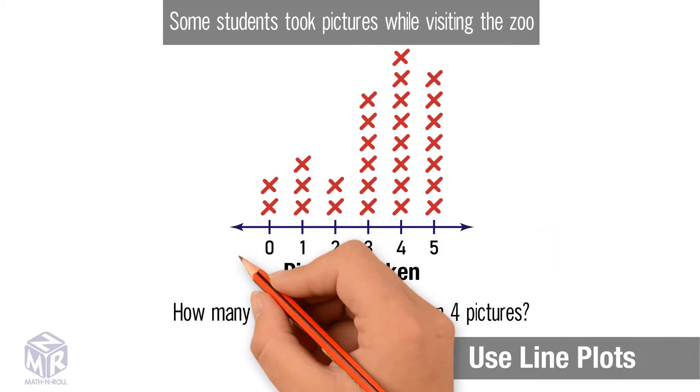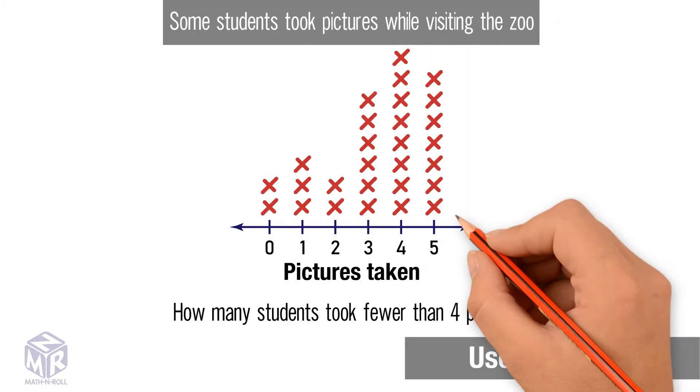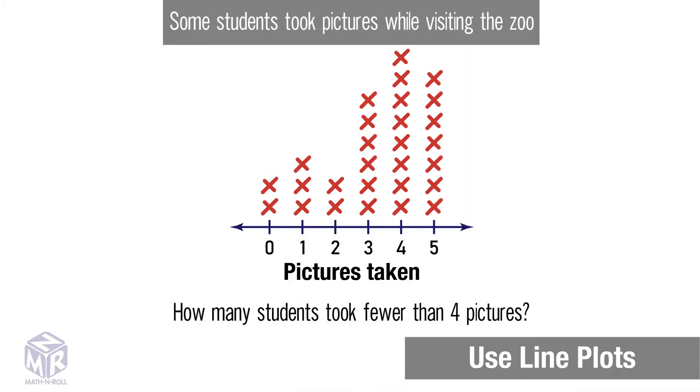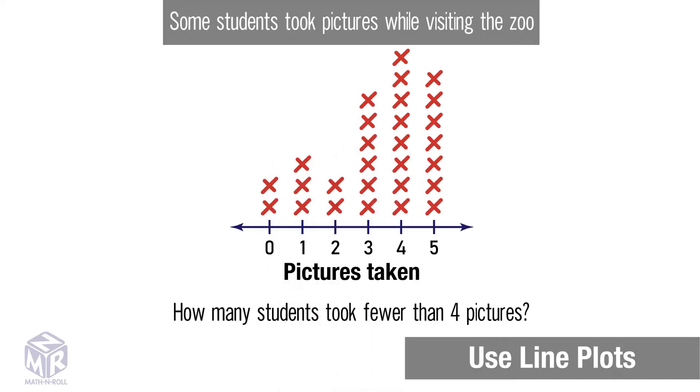The numbers on the number line tell us how many pictures were taken. Each x above the number line stands for one student. Two students took zero pictures. Three students took one picture.